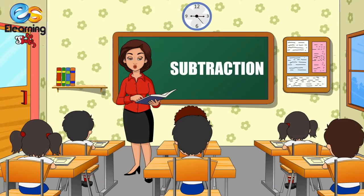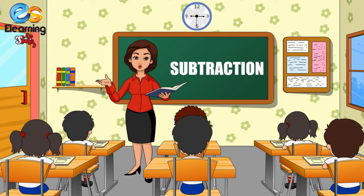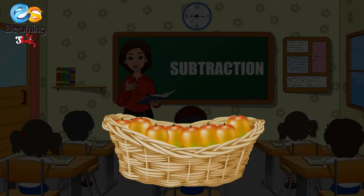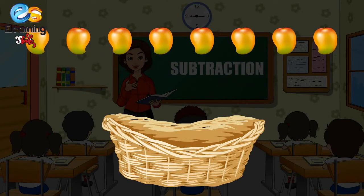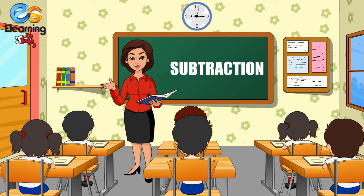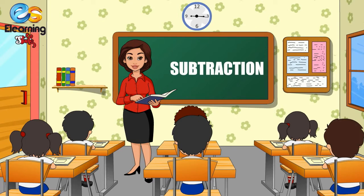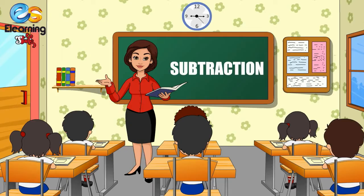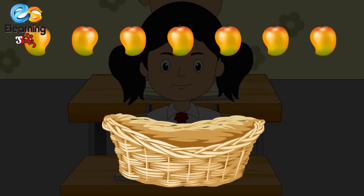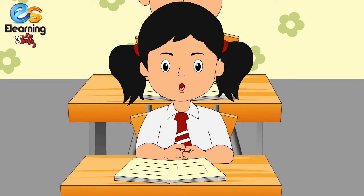Now, who will give the correct answer? I have a basket with eight mangoes in it. I take out one mango from this basket — how many mangoes are left? You can use your fingers and thumbs to count. One, two, three, four, five, six, seven — seven mangoes are left in the basket. You are correct!